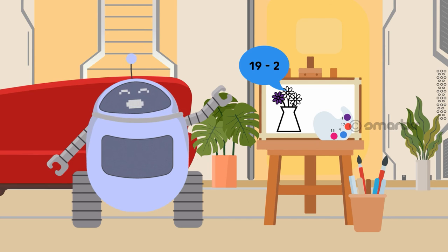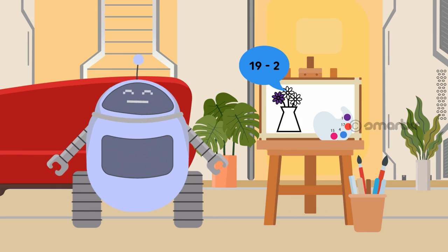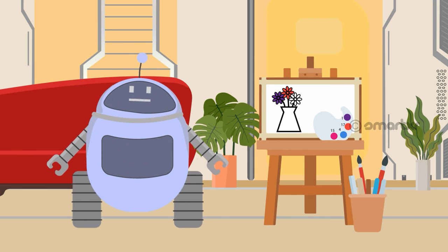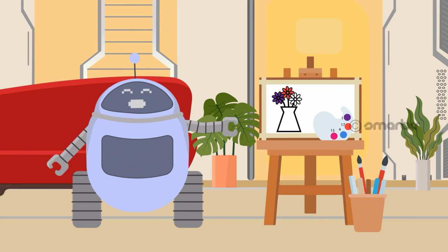Now can you subtract 2 from 19 to get the color of the second flower? Yay! We got the color of the second flower as well. It is red. Because it says here that the number 17 stands for red. Do you like the color red? I know I do!